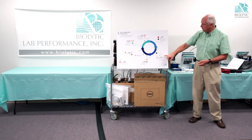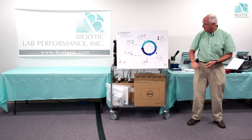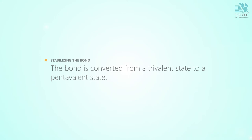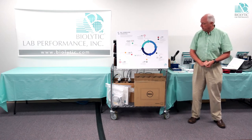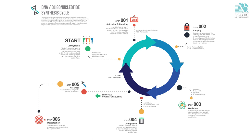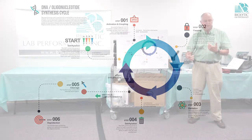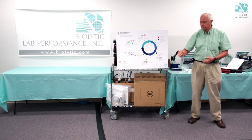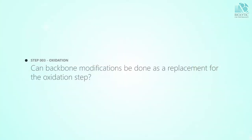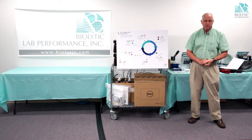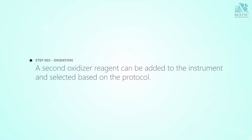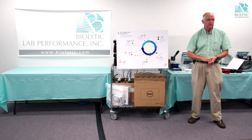After capping, we go into oxidation. Oxidation converts the phosphor backbone from a trivalent to a pentavalent state to stabilize it. In the trivalent state, it will break apart over time, and certainly at the end during deprotection if not stabilized. This step can sometimes be replaced by a sulfurization or phosphorothioation step, depending on whether you're doing backbone modifications. Some people want a second oxidized reagent on their instrument so they can selectively use one or the other depending on what they're making.